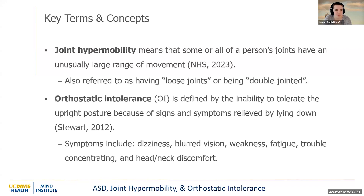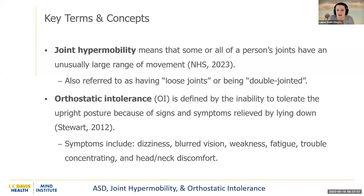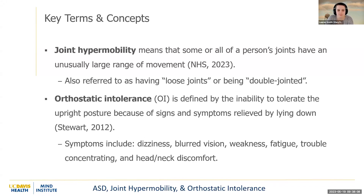To start off, just to define joint hypermobility and orthostatic intolerance for you. Joint hypermobility means that some or all of a person's joints have an unusually large range of motion. This is also often referred to as having loose joints or being double jointed.